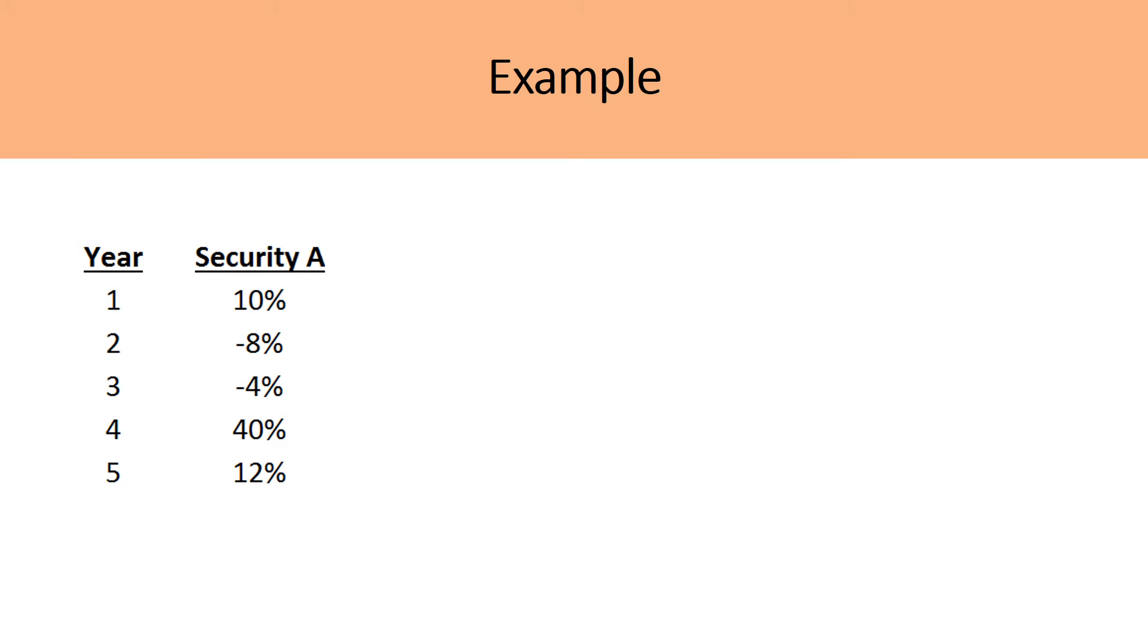So let's take a look at an example. Security A over a five-year time horizon increased by 10% in year one, dropped by 8% and dropped by 4%, 40% afterwards and then up by 12%. And so if we were to calculate the arithmetic average, we'd simply add up those values to get a sum of 50%, then divide by the number of periods, which in this case is five years, to get an arithmetic average of 10%.